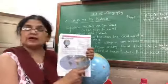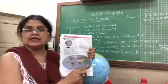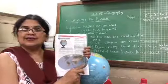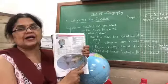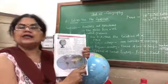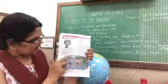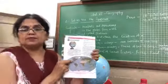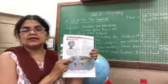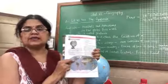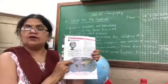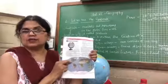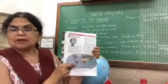If I take Australia, it lies in the southern hemisphere and in the eastern hemisphere. If I take the continent of North America, it lies in the western hemisphere and, as the name itself says, it is in the northern hemisphere.